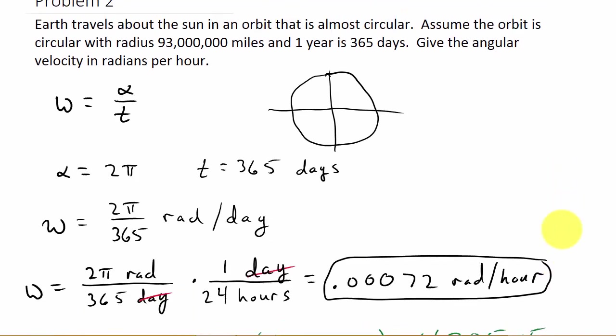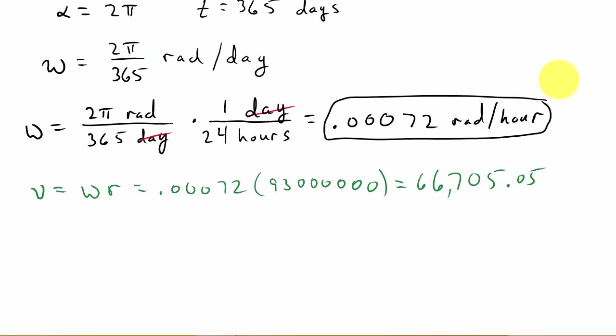This is 66705, what? Well, our time is in hours, time's in hours, the distance is in miles. So this would be miles per hour. So that would be your linear velocity.